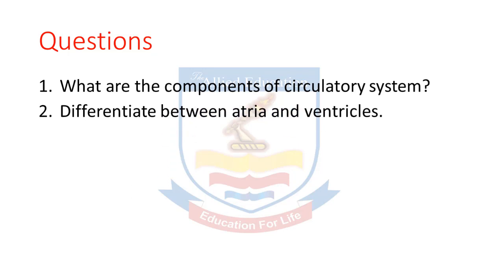Next question: differentiate between atria and ventricles. Atria ki baat karte hain — the upper two thin-walled chambers are known as atria, yaani upar waale do khaane patli deewaroon waale hain unhe kehte hain atria. And the lower two chambers are thick-walled and known as ventricles — nichle do khaane moti deewaroon waale hain aur unhe kehte hain ventricles.